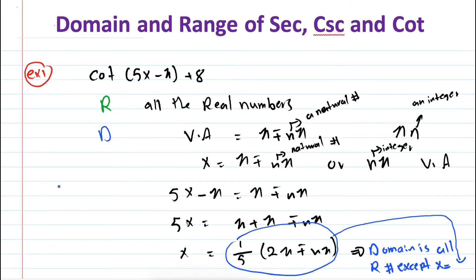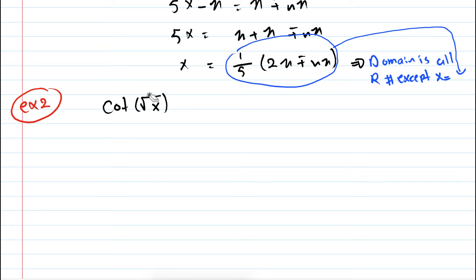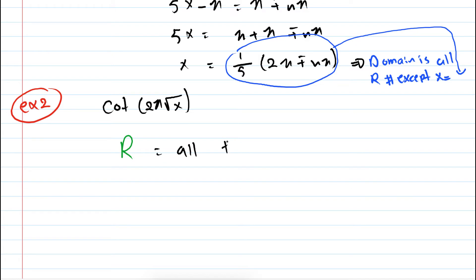Let me give you another example. Example 2: suppose I have cotangent of 2π times the square root of x. We're asked to find the domain and the range. The range is easy — the range is all the real numbers.